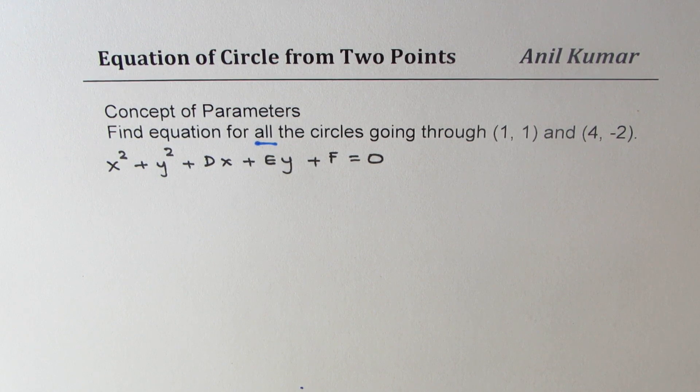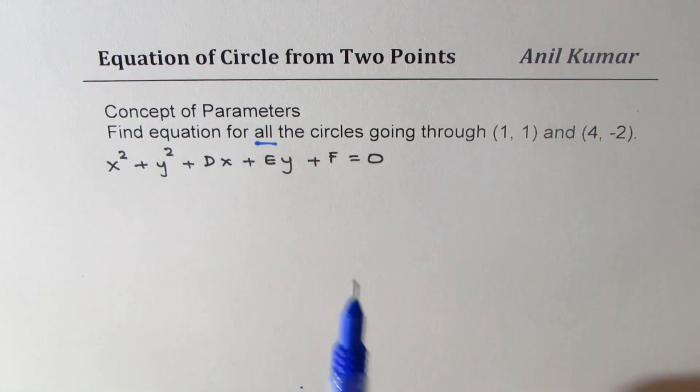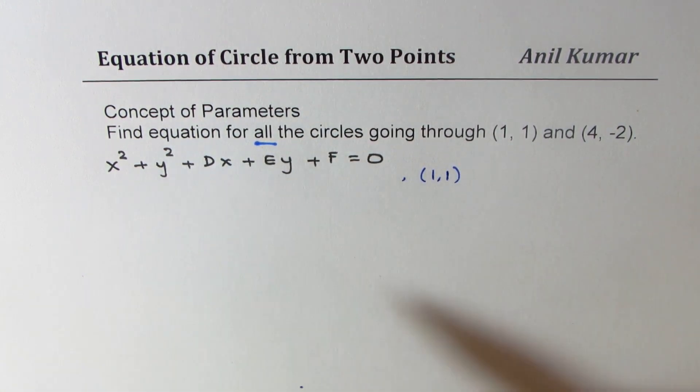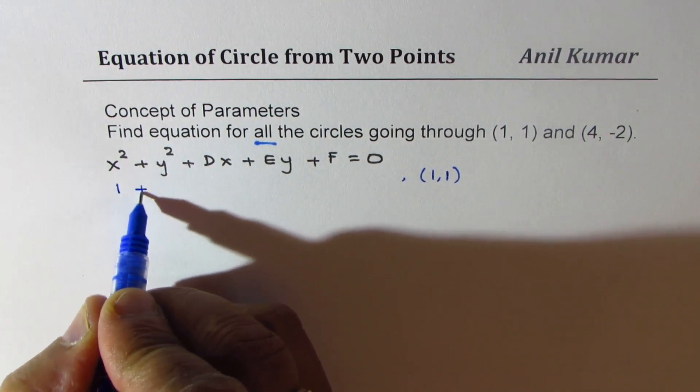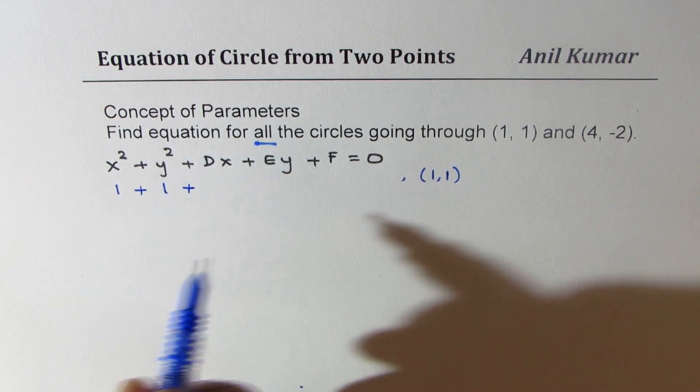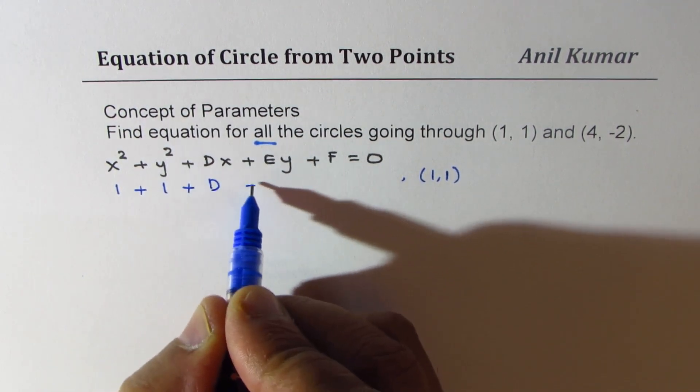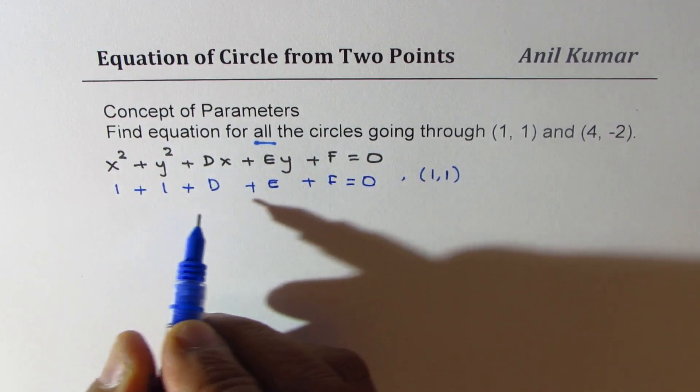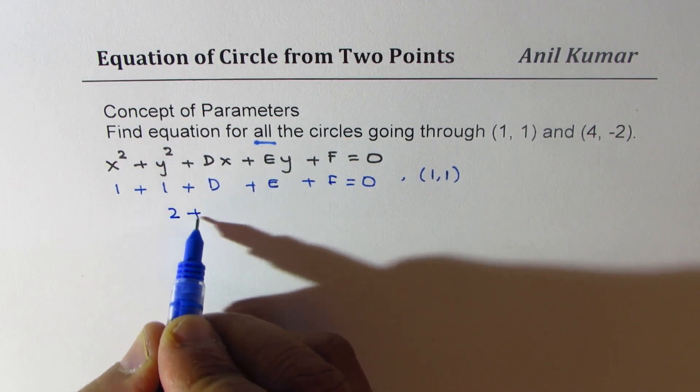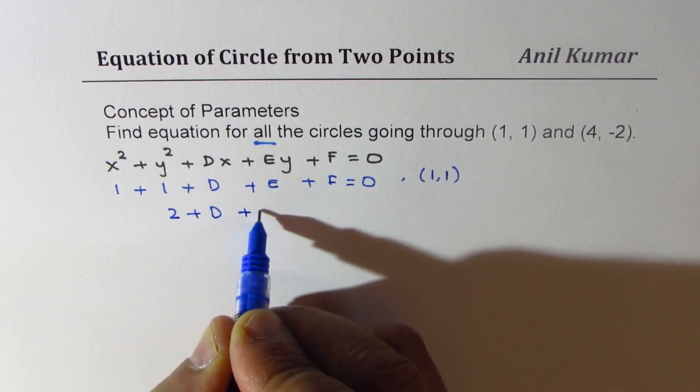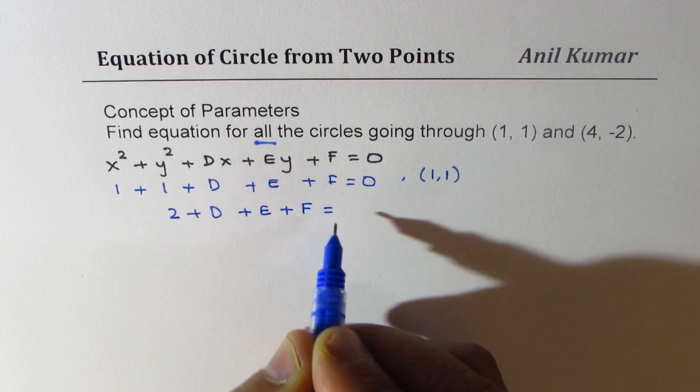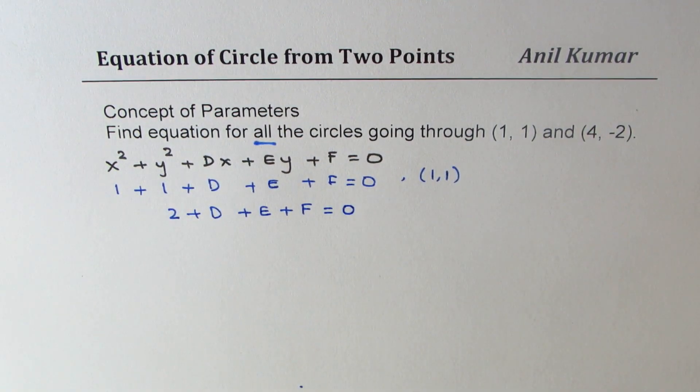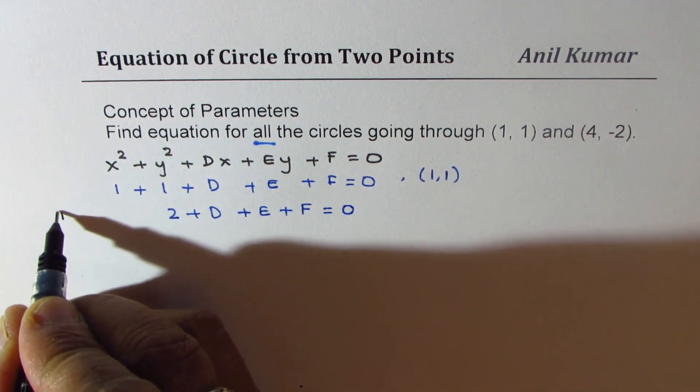So if I substitute the point (1,1), in that case we get 1² is 1 plus 1 plus x being 1 will give us d. Here we get e + f = 0, or we could write this as 2 + d + e + f = 0. So that becomes one of our equations. Let's call this equation number 1.